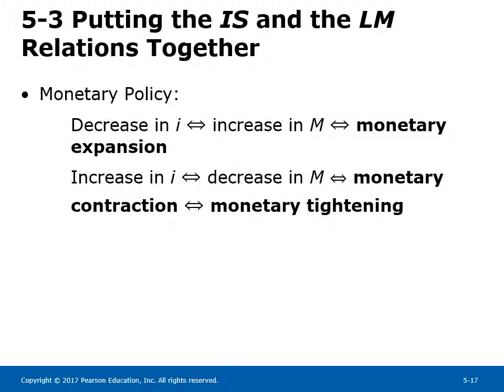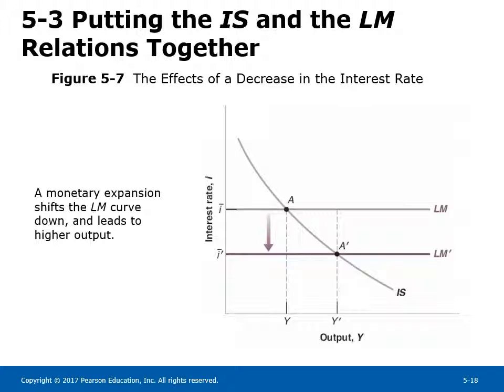Monetary policy is implemented through changes in the money supply by the central bank. A monetary expansion — an increase in money supply — leads to a lower interest rate, causing the LM curve to shift down. A monetary contraction causes the interest rate to rise and the LM curve to shift up. Note that a change in taxes has no effect on the LM curve; in general, a curve shifts in response to a change in exogenous variables that appear directly in the equation for that curve. Figure 5-7 shows the effects of a decrease in the interest rate from expansionary monetary policy: the economy moves along the IS curve from A to A', with higher output and a lower interest rate.